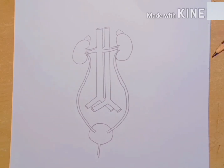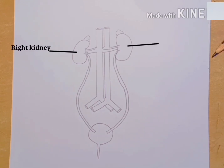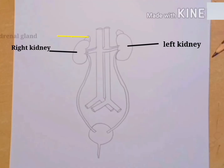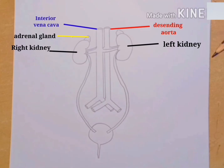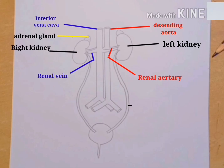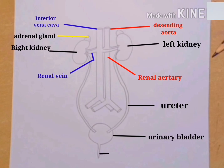Now we are labeling this diagram. This is the right kidney. This is the left kidney. This is called the adrenal gland. This is the inferior vena cava. This is the descending aorta. Next is the renal vein. This is the renal artery. This is the ureter. Next is the urinary bladder. And lastly, this is called the urethra.